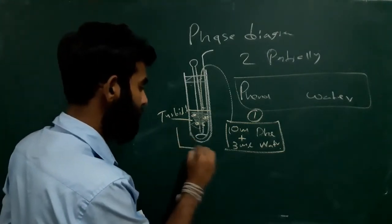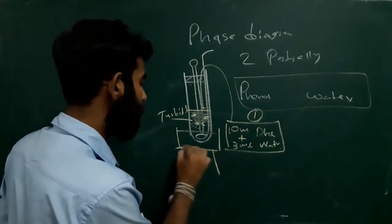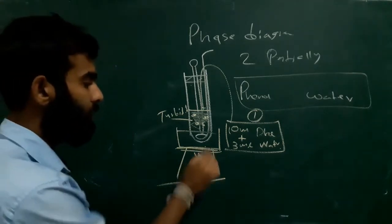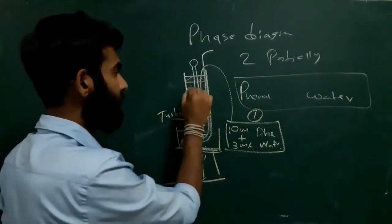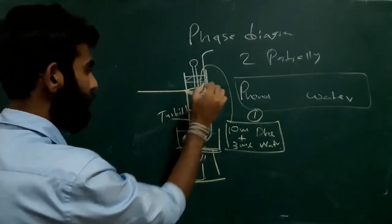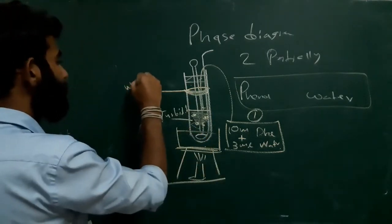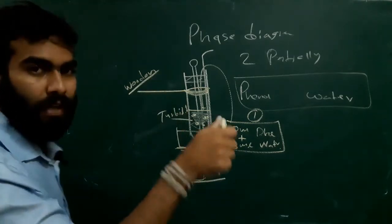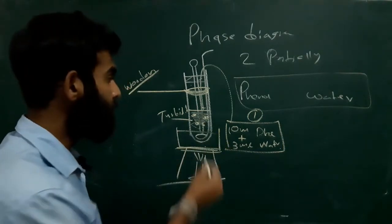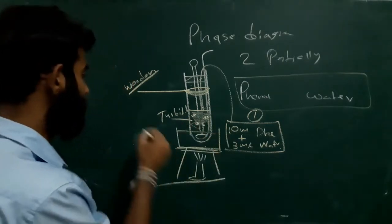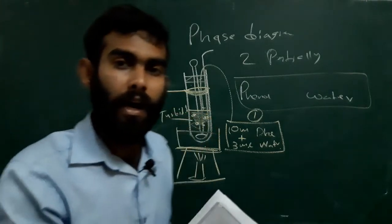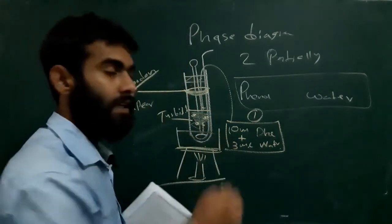We will use a water bath with a tripod and Bunsen flame, and we will heat this water bath. Consequently, this boiling tube will get heat. We will use a wooden boiling tube holder to handle the boiling tube. When we increase the temperature, at some higher temperature, this turbidity will disappear. That means at that temperature, the two solutions are fully miscible, and we can see a clear solution.